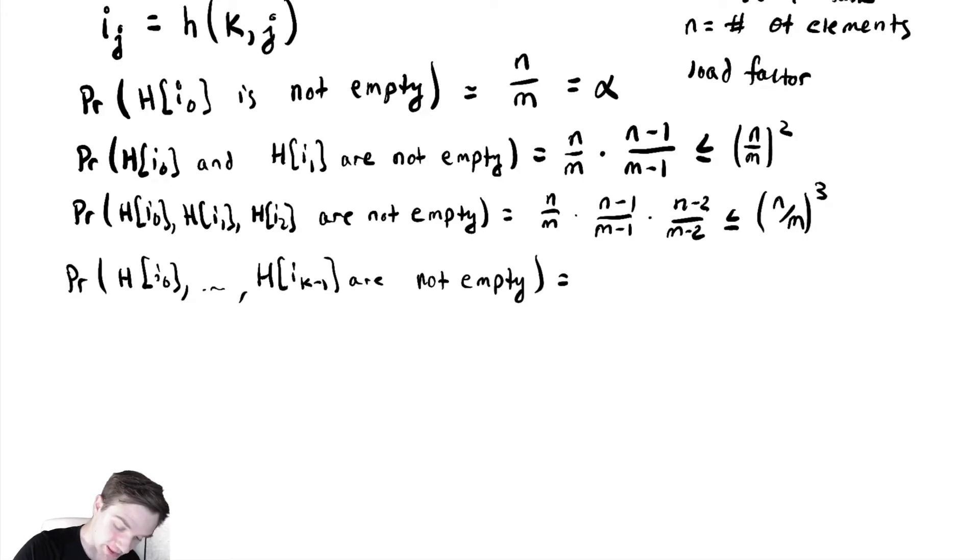This probability equals n/m times (n-1)/(m-1) all the way down until (n-k+1)/(m-k+1). We'll do the same bound above: (n/m)^k. I chose k-1 to have a nice power. Note we have something familiar from the previous problem.